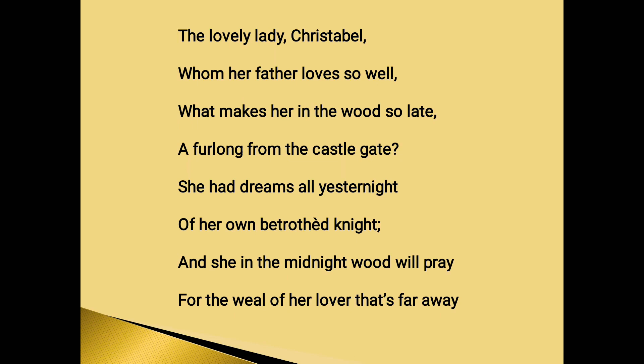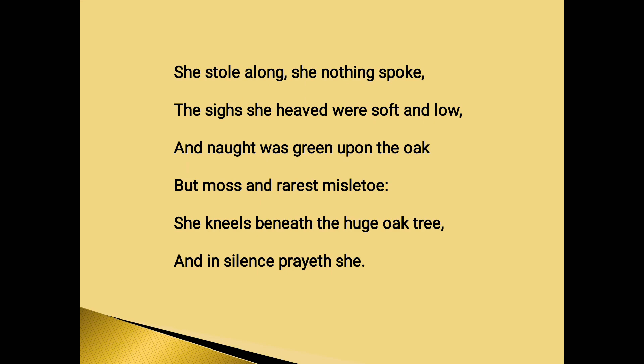Here the main character of the poem, Christabel, is introduced all of a sudden. 'She stole along, she nothing spoke; the sighs she heaved were soft and low. And naught was green upon the oak but moss and rarest mistletoe.' Silently in the forest she breathes softly and lowly. On the oak tree there is nothing green except the moss and the mistletoe — a parasitic plant which rarely grows on the oak.